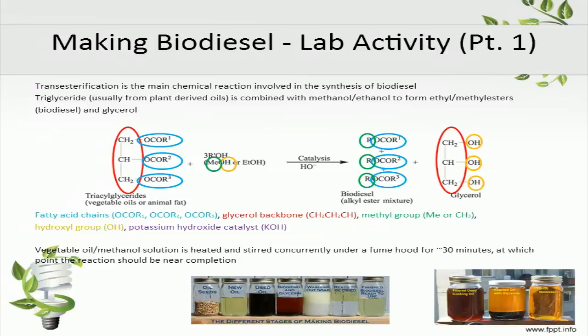Heat is required to speed this reaction and decrease the viscosity of the fluid to help with mixing. Vegetable oil and methanol will not mix together spontaneously, so this step is required to force interaction between the reactants in order for the reaction to proceed. After two days of settling, the glycerol should have separated out of the biodiesel. The end product is a less dense layer of biodiesel on top of a denser layer of glycerol. Stoichiometrically, three methanol molecules are required to react with one vegetable oil molecule, producing three biodiesel molecules and one glycerol molecule. For more detailed instructions, read the associated handout.